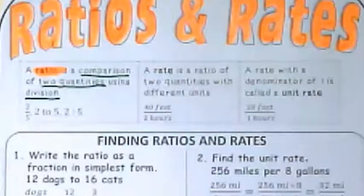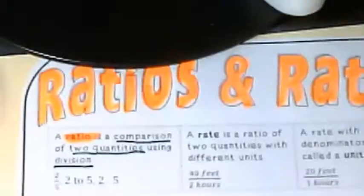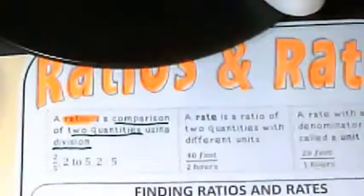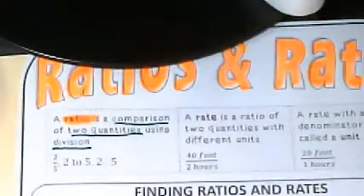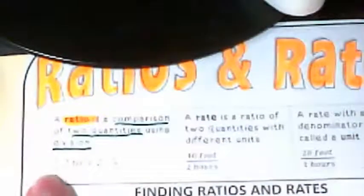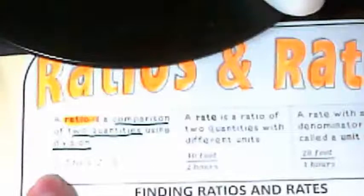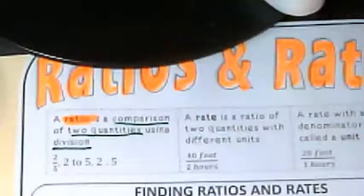What's being shown here is that a ratio can be written in three ways. Let's see if I can get a better view of this. So I have two to five. It looks like a fraction here, but it's not a fraction. It's a ratio.